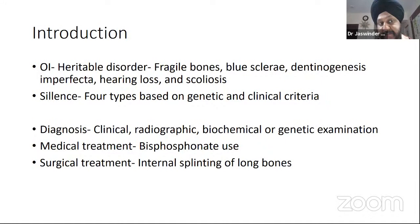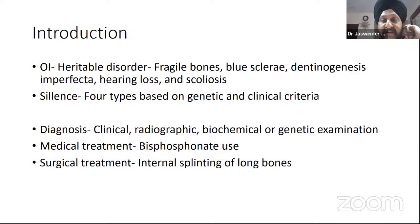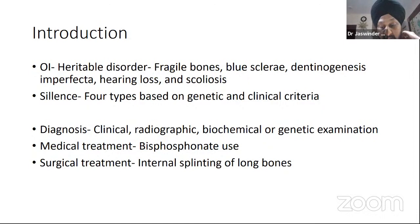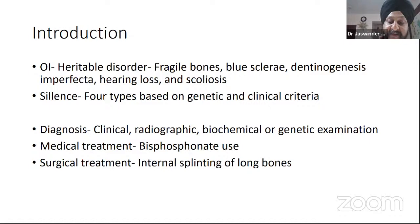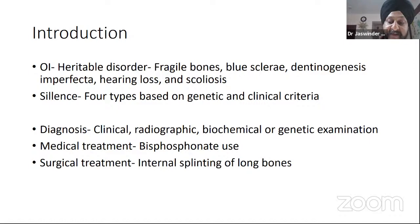Osteogenesis imperfecta is a heritable disorder characterized by fragile bones — the bones are very weak — with blue sclera, dentinogenesis imperfecta, hearing loss, and scoliosis. In 1979, Sillence classified the disease into four basic types based on genetic and clinical criteria. The diagnosis is based on clinical, radiographic, biochemical, and genetic examination. The mainstay of medical treatment is bisphosphonate use, and surgical treatment mainly consists of internal splinting of the long bones.